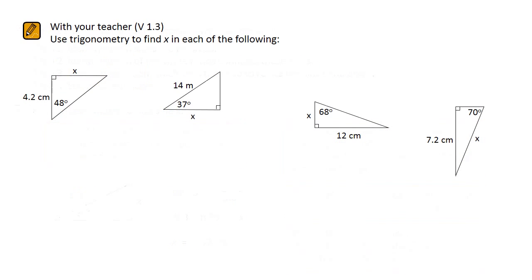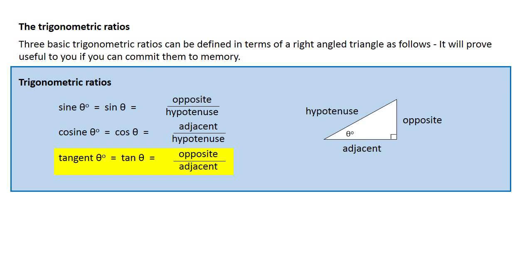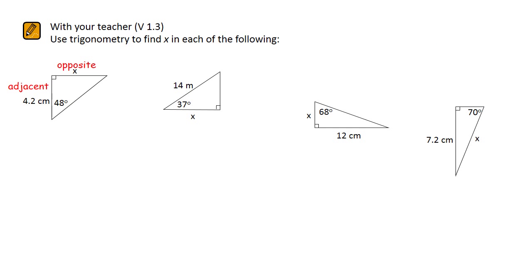Let's try some examples together. The first question involves the opposite and adjacent sides. Looking at our notes, the opposite and adjacent sides are connected together by the tan ratio — tan of the angle equals opposite over adjacent. So it's tan of 48 equals opposite x over adjacent 4.2. We multiply both sides by 4.2 to get x equals 4.2 times the tan of 48. Using a calculator, our answer is 4.66.